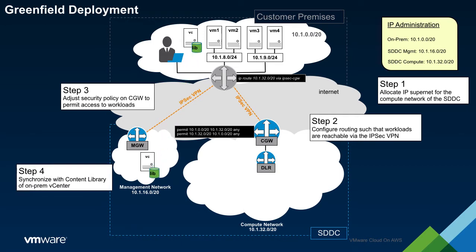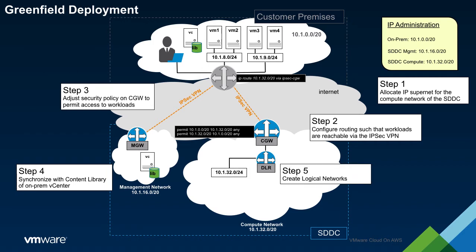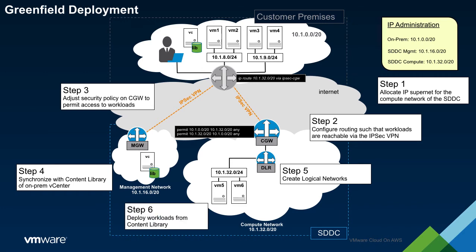The next step is to create logical networks for our workloads. Once logical networks have been created, we may begin deploying the workloads themselves. These workloads are accessible to the on-prem network through the VPN connection to the CGW.